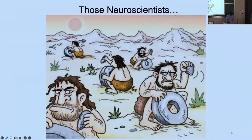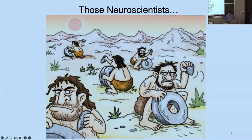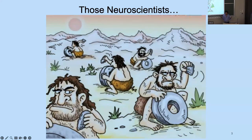Some of you might agree and some not, but I think this is a fairly contemporary depiction of modern neuroscience. What we see here are cavemen and women who are doing their own little thing — they're all measuring some neuromodulator in some part of the brain in some species without realizing that they're all doing the same thing.